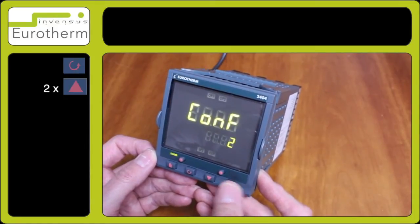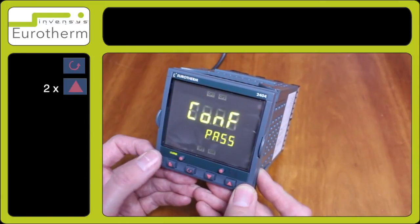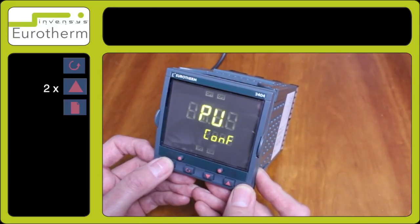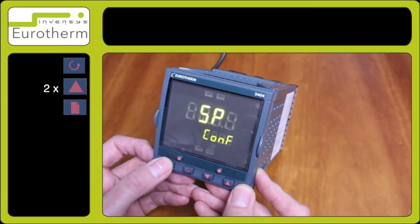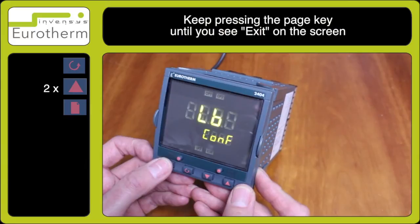You now have access to the configuration parameters. By pressing the page key, you will notice you have the other parameters in the list where you can change the outputs, the inputs, and the configuration of the controller.